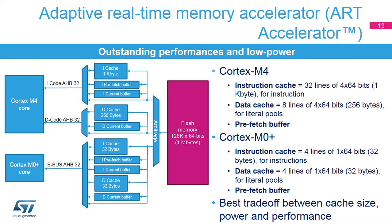The Cortex-M4 instruction cache contains 32 lines of 4 double words, and the data cache has 8 lines of 4 double words. Once all the instruction cache memory lines have been filled, the LRU or Least Recently Used policy is used to determine the line to replace in the instruction memory cache. This feature is particularly useful when code contains loops. This architecture is chosen to provide the best trade-off between cache size, power consumption, and performance. After each miss, the cache is updated with only the requested double word to limit flash access for power saving. In a line, the four double words may not all be valid. In case of a miss, the code takes the instruction directly from the flash memory.